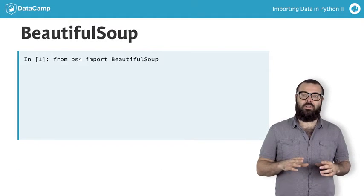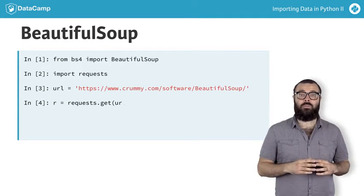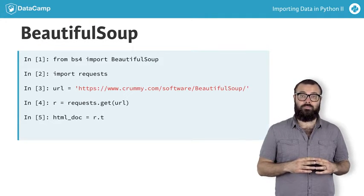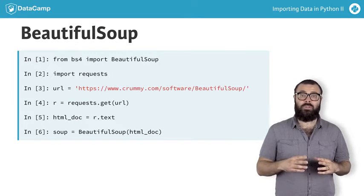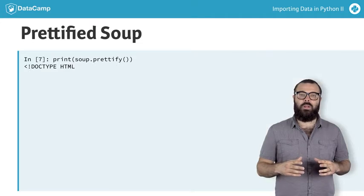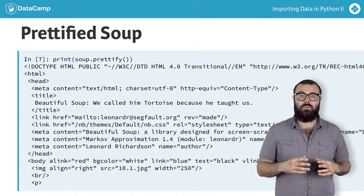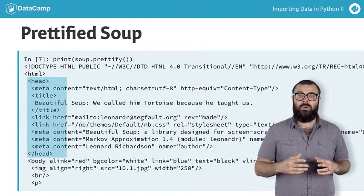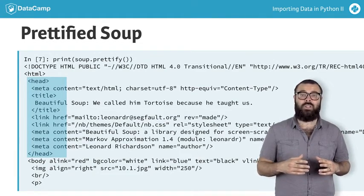Once again, you use requests to scrape the HTML from the web. Then you create a Beautiful Soup object from the resulting HTML and Prettify it. Printing the Prettified soup and the original HTML, you can see, for example, that the Prettified soup is indented in the way you would expect properly written HTML to be.